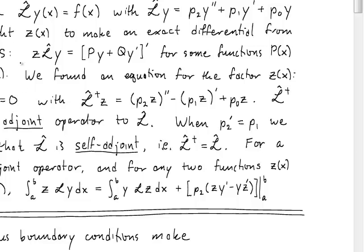So L dagger z is a new differential equation that's now homogeneous and is defined by the new adjoint operator. This L dagger is called the adjoint operator to L, and it has this definition.